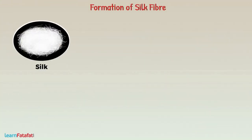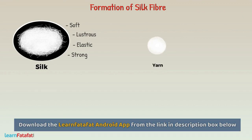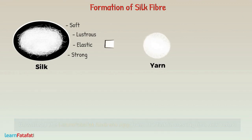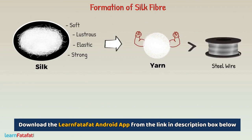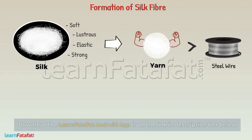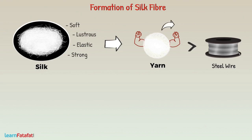Silk is a very important natural fiber. It is soft, lustrous, elastic and strong. You will be surprised to hear that yarn produced by silkworms is much stronger than a steel wire of similar thickness. More importantly, it can be colored very easily.